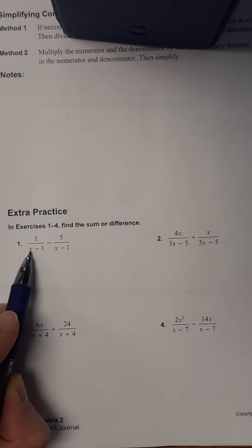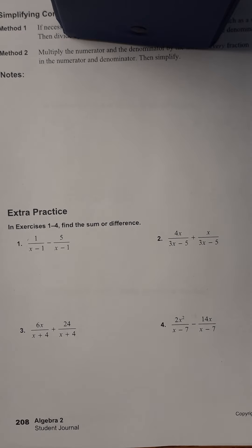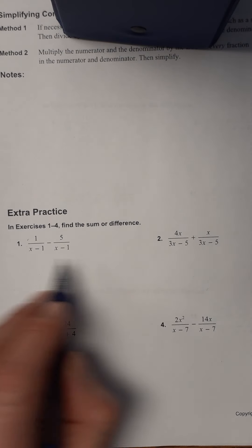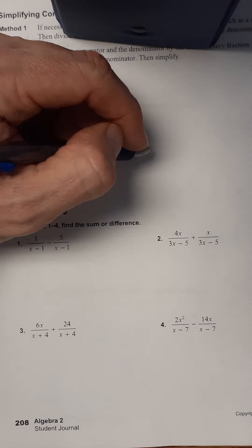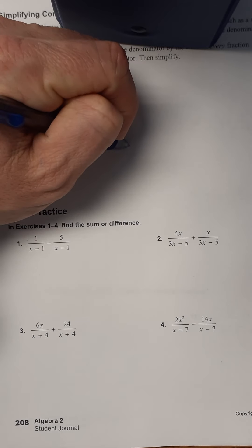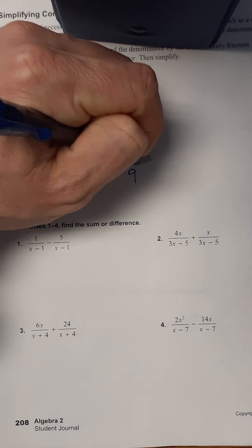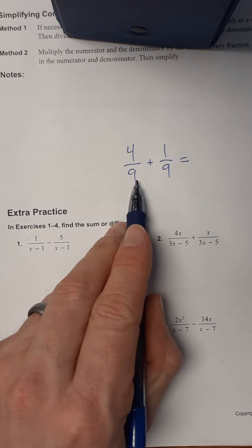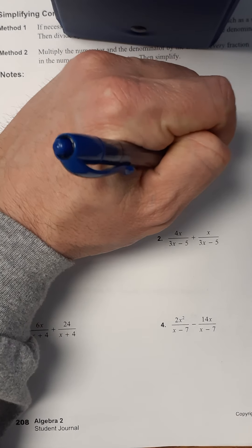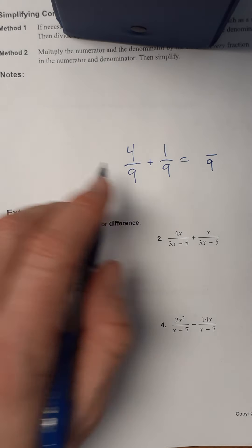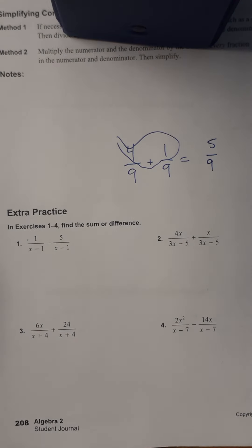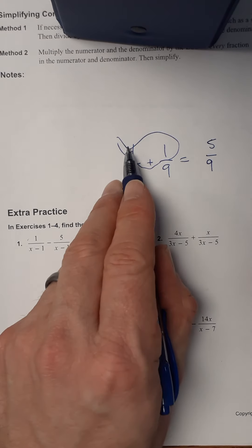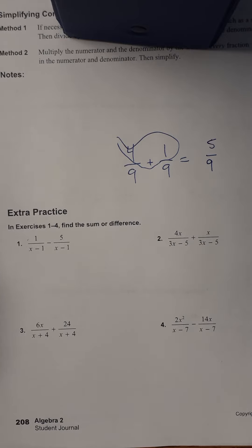What makes it rational? We have a variable on the bottom of the fraction — you see a bunch of fractions that we're adding or subtracting and all of them have variables on the bottom. To add or subtract fractions, say you had four ninths plus one ninth. As long as you've got a common denominator, you just turn it into one fraction. Nine is our denominator and you just add the numerators: four plus one is five ninths. As long as you have a common denominator, you just add the parts on top.